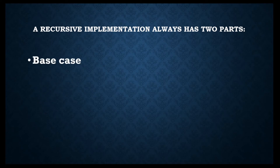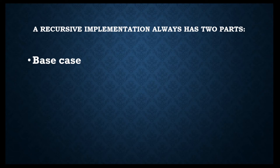With a recursive method there are two main things to take care of. The first is the base case — the smallest instance of the problem. In the Tower of Hanoi example, the base case is having just one disk. When we reach that, no more calculations are needed; we simply move the disk from the source to the destination tower and we're done. The base case is the smallest instance of the problem that cannot be decomposed any further.